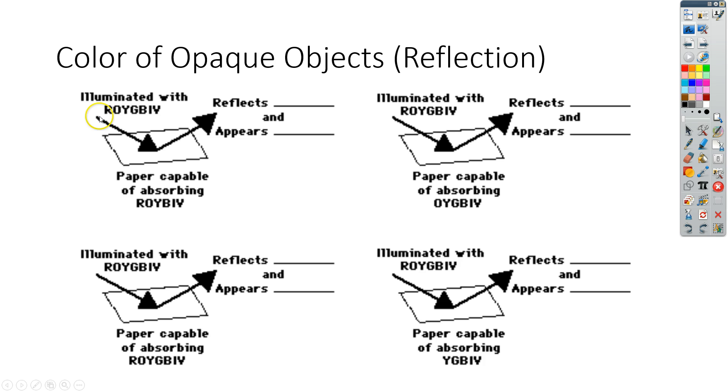When you see the acronym ROYGBIV, those are actually all the colors that make up white light. So it would be red, orange, yellow, green, blue, indigo, which is kind of purplish, and then violet. All of those colors make up white light. So essentially this is white light hitting the paper.